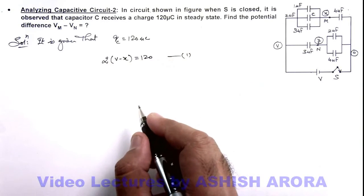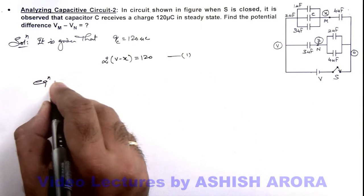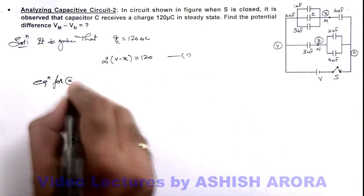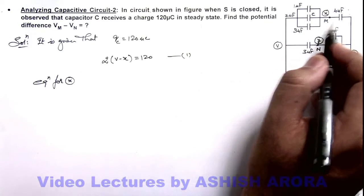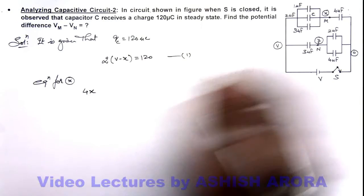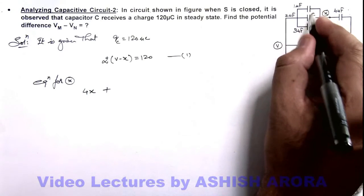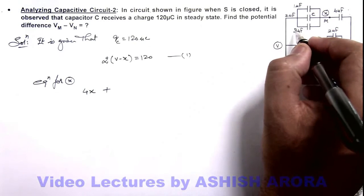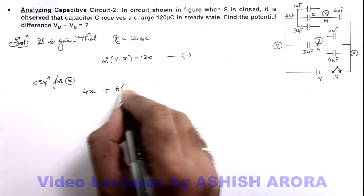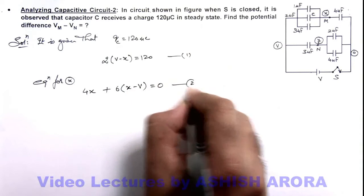We can further write the equation for this potential x. If we write equation for x, which is the sum of the charges on all plates connected to it to be equal to zero, that will be 4x, the charge on 4 microfarad plate plus the charges on these 3 capacitors. The total capacitance for these 3 in parallel will be 3 plus 2 plus 1, 6 microfarad. So this is 6 multiplied by x minus V, and this should be equal to zero. This is our equation 2.